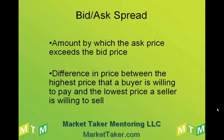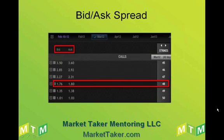The definition of the bid-ask spread is the amount by which the Ask price exceeds the bid price — the difference between the highest price a buyer is willing to pay and the lowest price a seller is willing to sell. Here's that same option chain: we have a bid price for the March 48 calls of $1.76 and an Ask price of $1.80. So currently the bid-ask spread is $0.04.